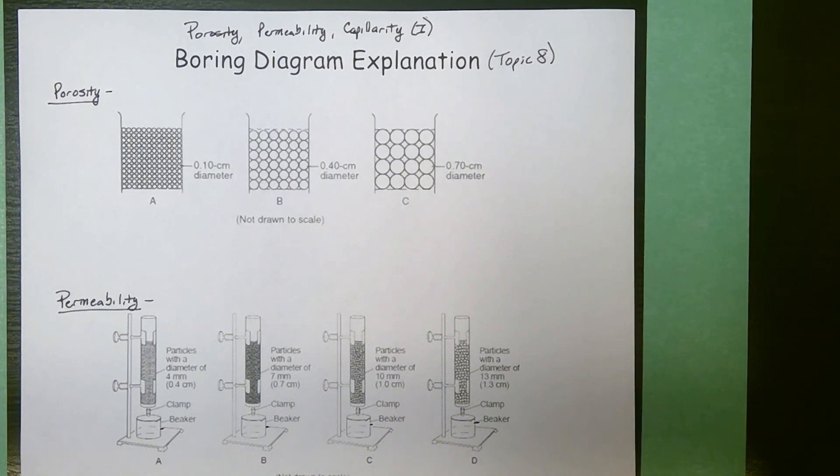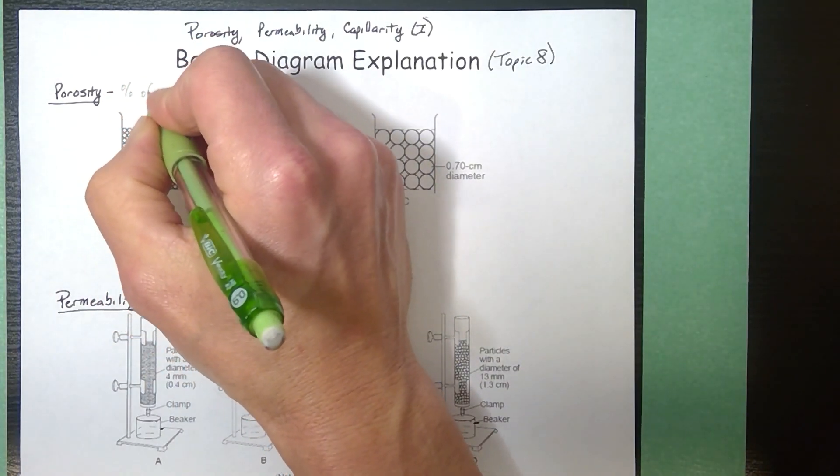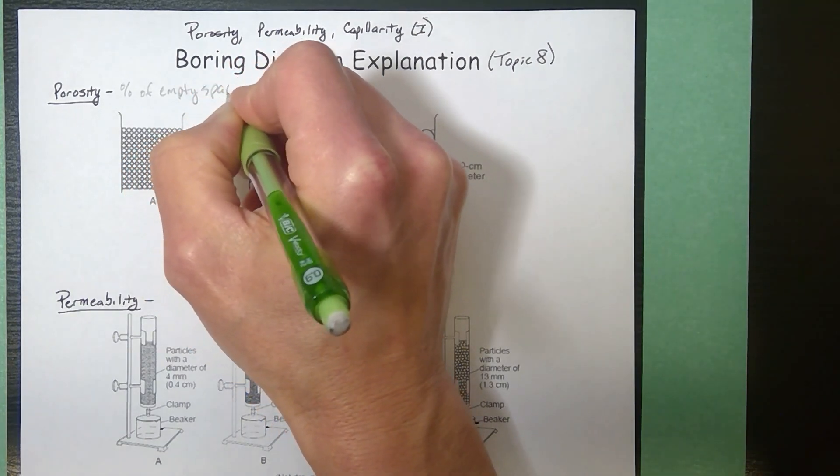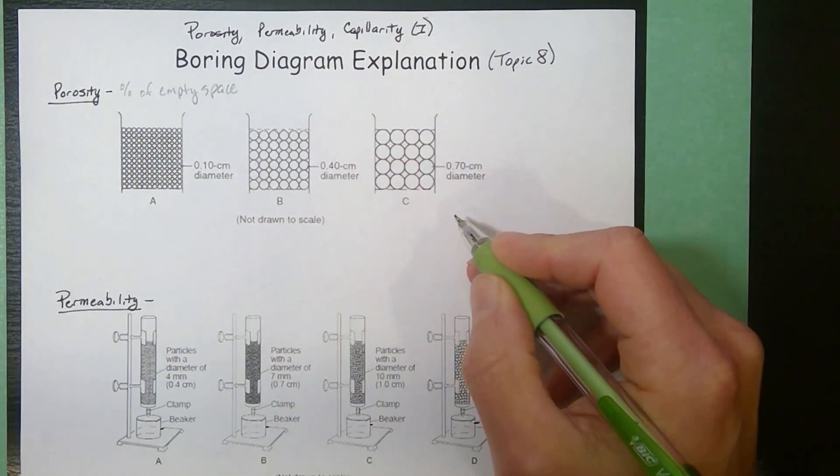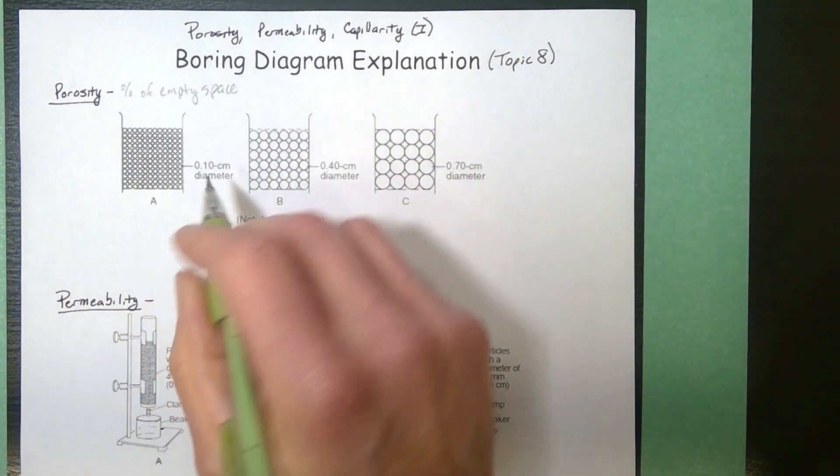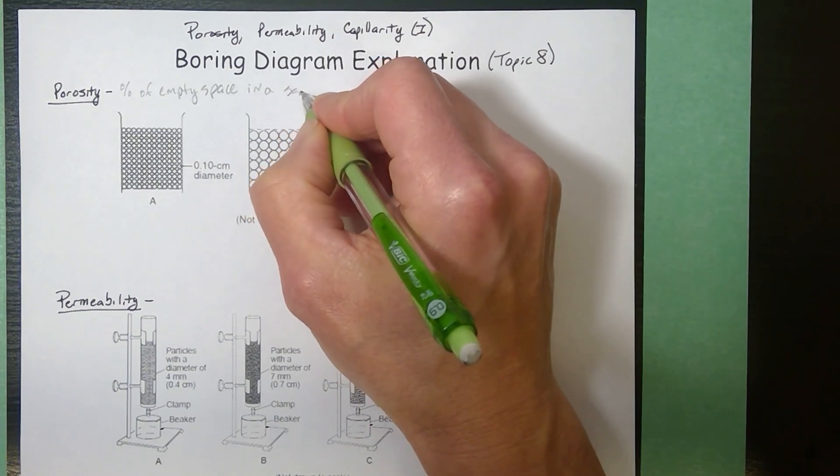If you wanted to calculate the porosity, the porosity would be the percent of empty space, all of the spaces in between the particles of the sample. So it's the percent of empty space in a sample.